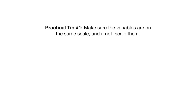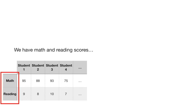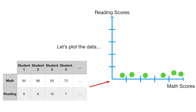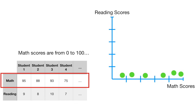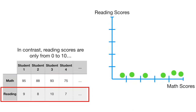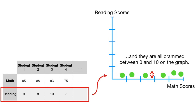Practical tip number one: make sure the variables are on the same scale, and if not, scale them. Here, we have math and reading scores for a bunch of students. Let's plot the data. Math scores are from 0 to 100, and they are spread out between 0 and 100 in the graph. In contrast, reading scores are only from 0 to 10, and they are all crammed between 0 and 10 on the graph.